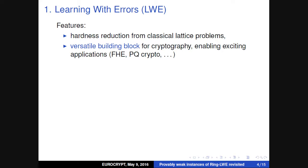Two features of LWE and reasons why this problem is appreciated: it came along with a hardness proof. If you can come up with an algorithm for solving LWE, you can also come up with quantum algorithms to solve certain well-known versions of lattice problems — shortest vector type problems. Another reason is that it turns out to be a very versatile building block for a lot of crypto. Fully homomorphic encryption is one of the main applications. It's also believed to be quantum secure, so it's being studied for post-quantum crypto.